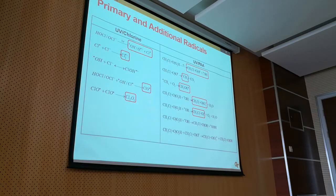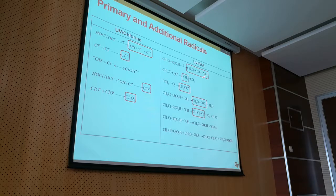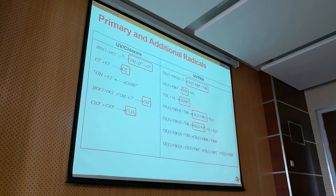As we use newer UV-based AOPs, there are other radicals beyond hydroxyl radical that could be generated. For example, UV-Chlorine produces OH radical and chlorine radical, but there are other chlorine-related radicals that could also form and be effective oxidants. UV-PAA not only produces those two radicals — other carbon-based radicals can also be produced. So as we use additional UV-based AOP options, the radical chemistry becomes more complicated, with primary and additional radicals whose reactivity needs to be understood.